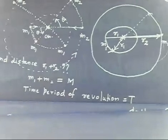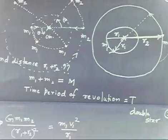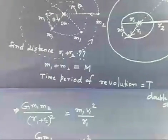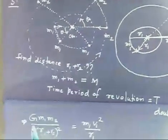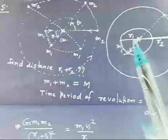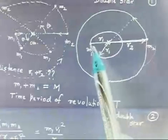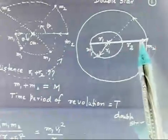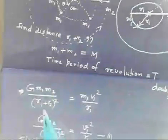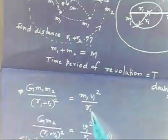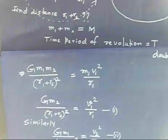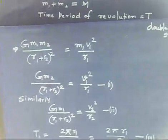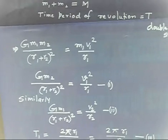Let us discuss the solution. For circular motion of m1, the force on m1 is Gm1m2 divided by (r1+r2) squared — the force depends on the total distance r1 plus r2. Setting this equal to m1 times v1 squared over r1, you can cancel m1 to get Gm2 divided by (r1+r2) squared equals v1 squared over r1. Similarly, you write for m2 with m1 and v2.